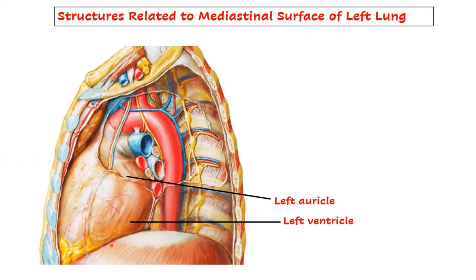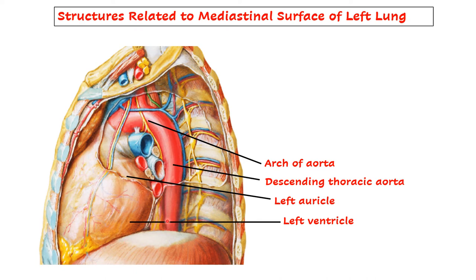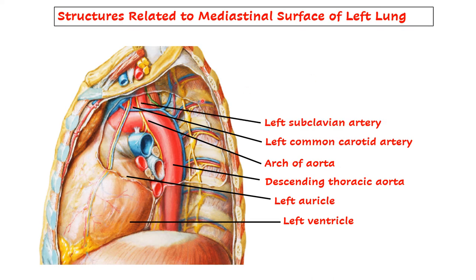Let us see which arteries. You can see the arch of aorta and the descending thoracic aorta. Plus two important branches of the arch of aorta: the left common carotid and the left subclavian artery. The brachiocephalic trunk will not come in relation to the left lung - only two branches: the left common carotid and left subclavian. This completes our heart with arteries.